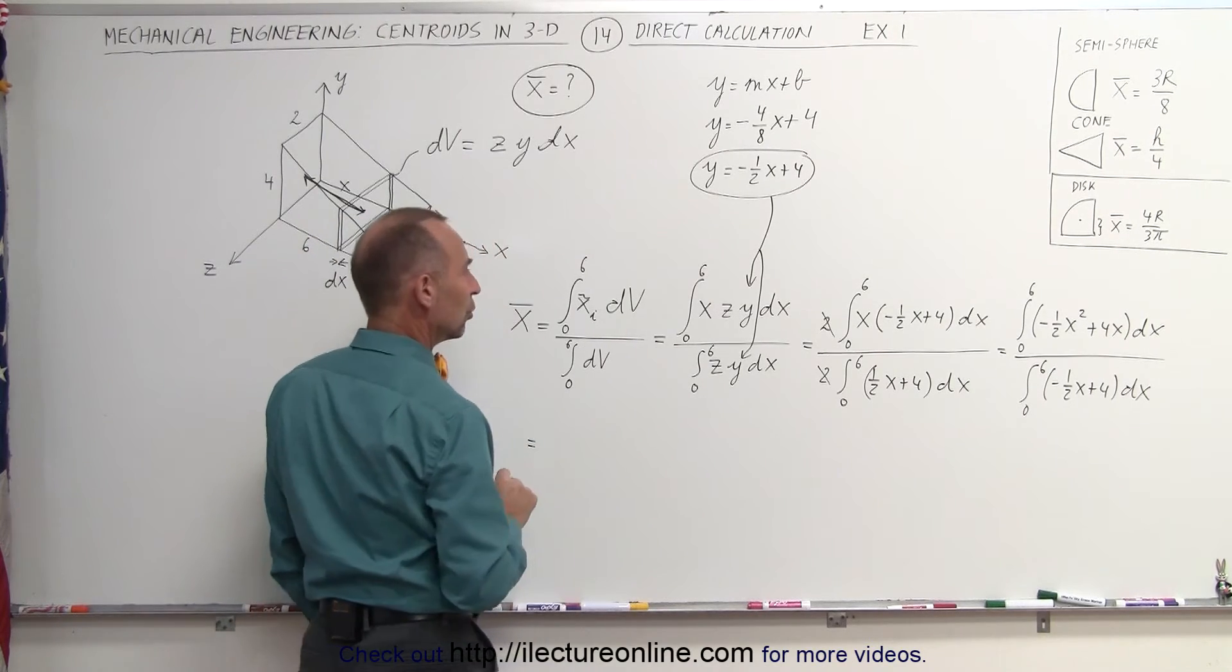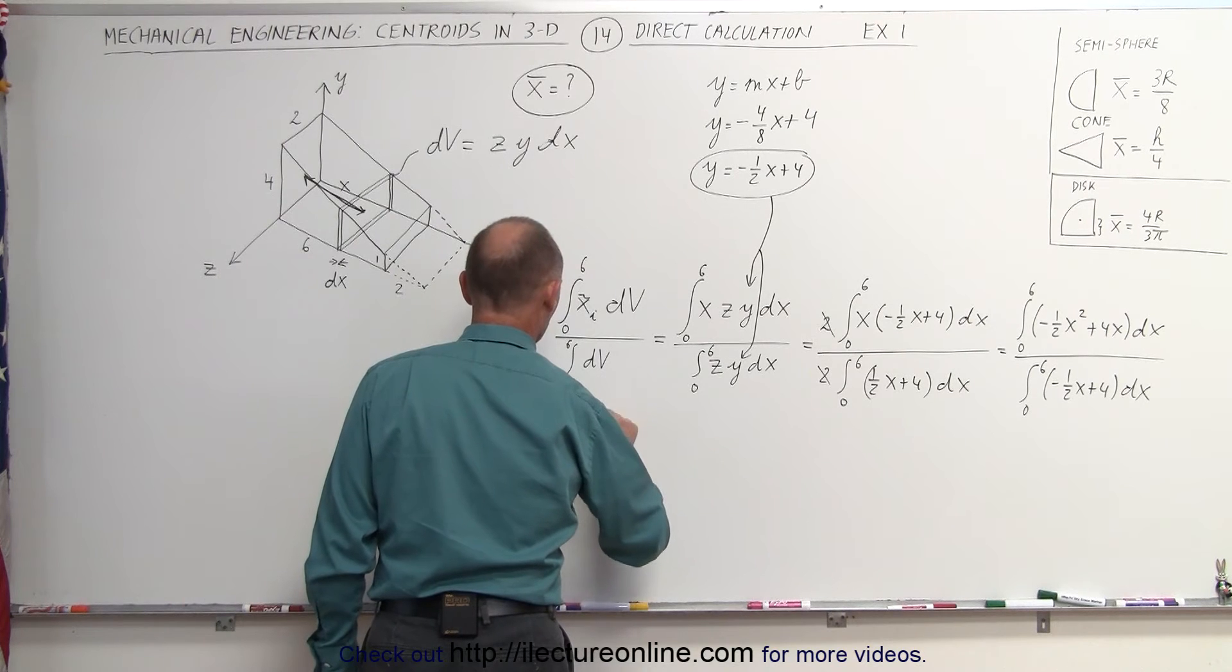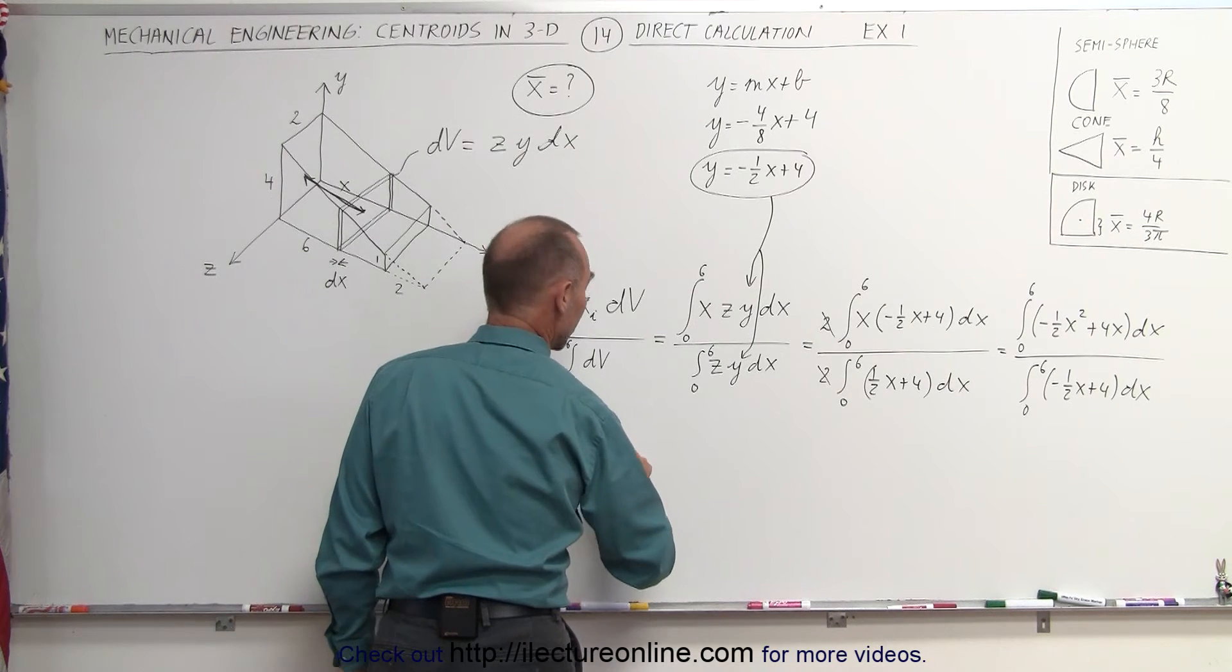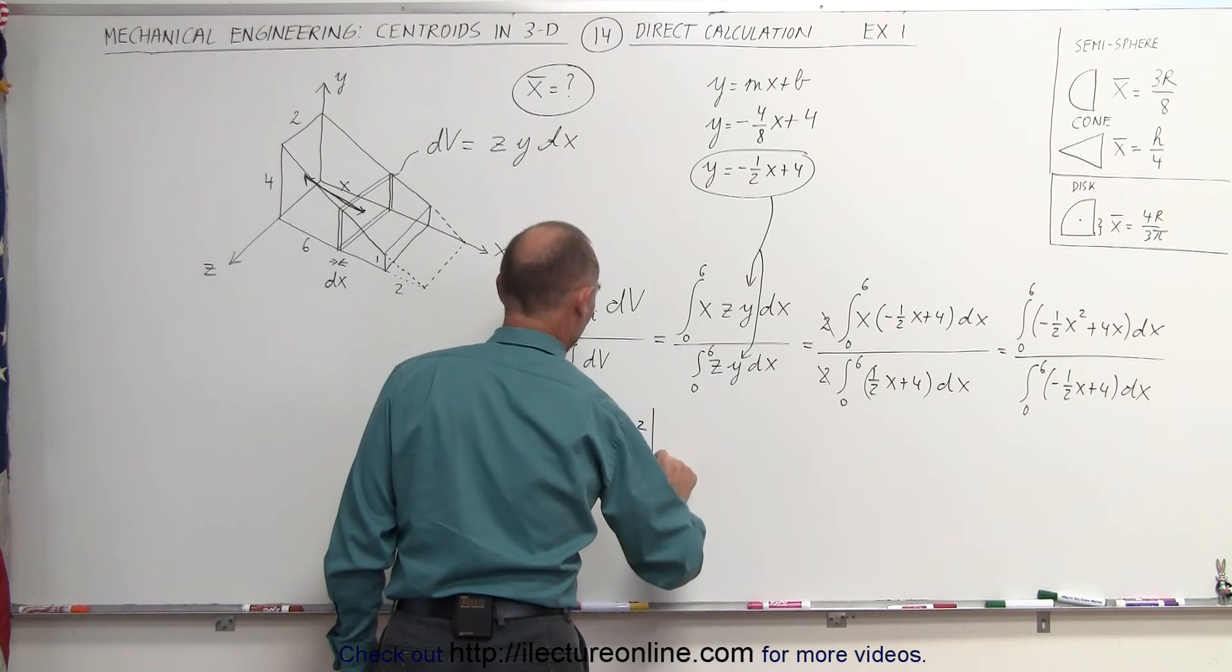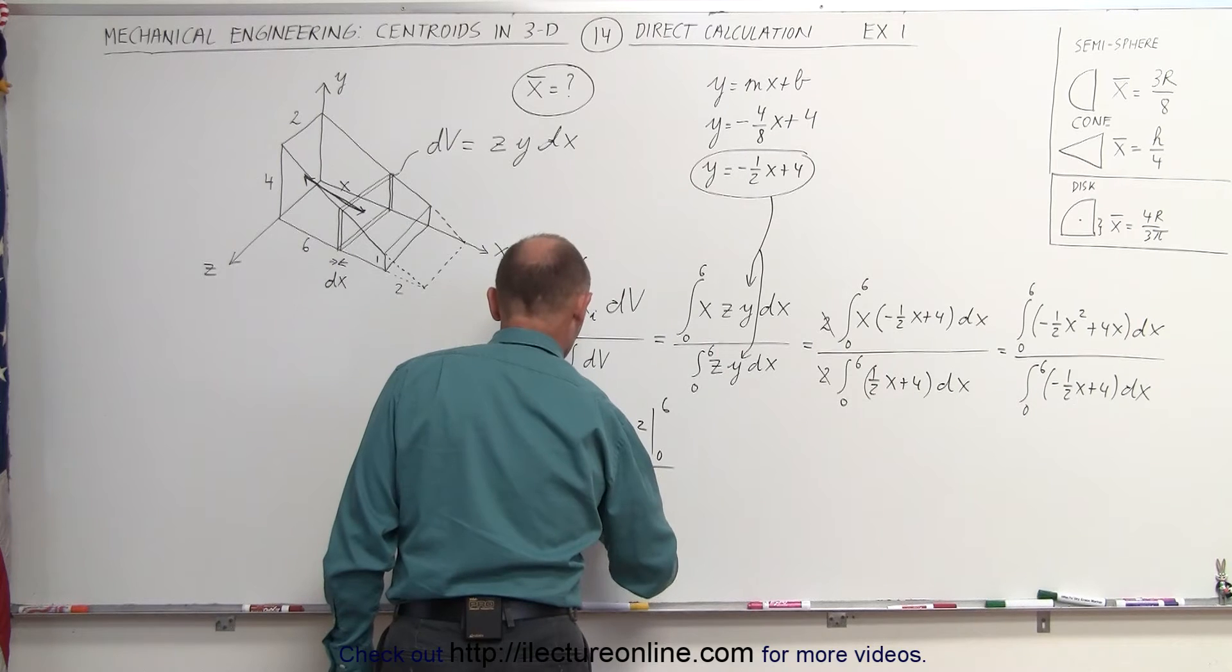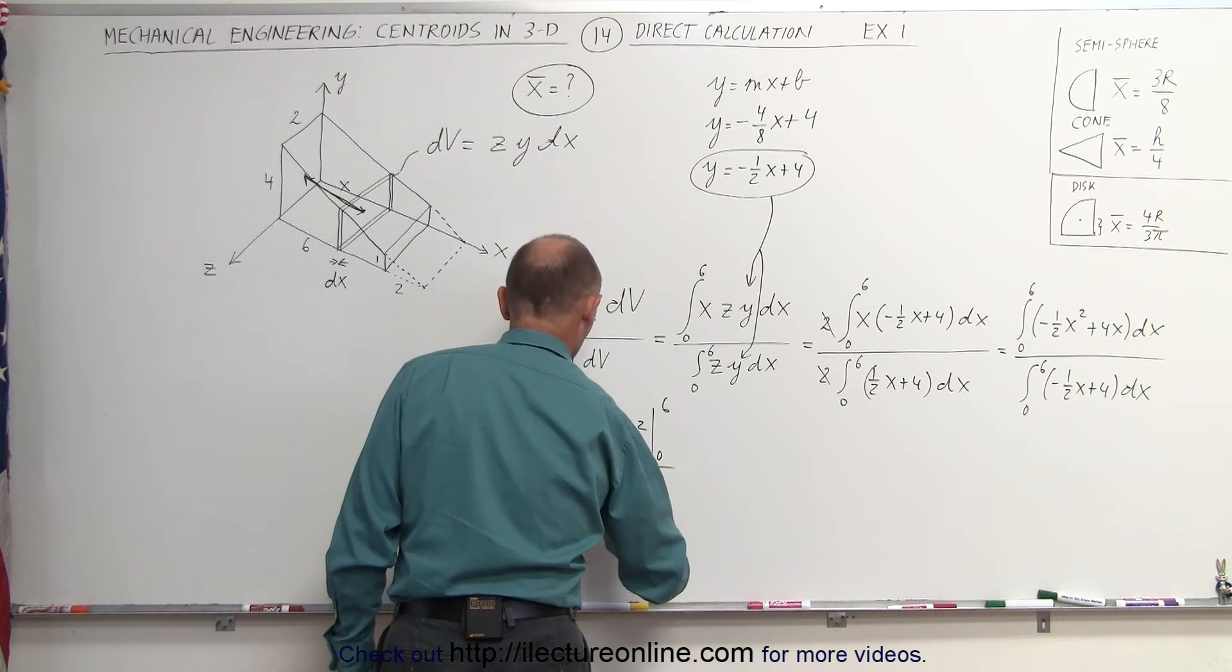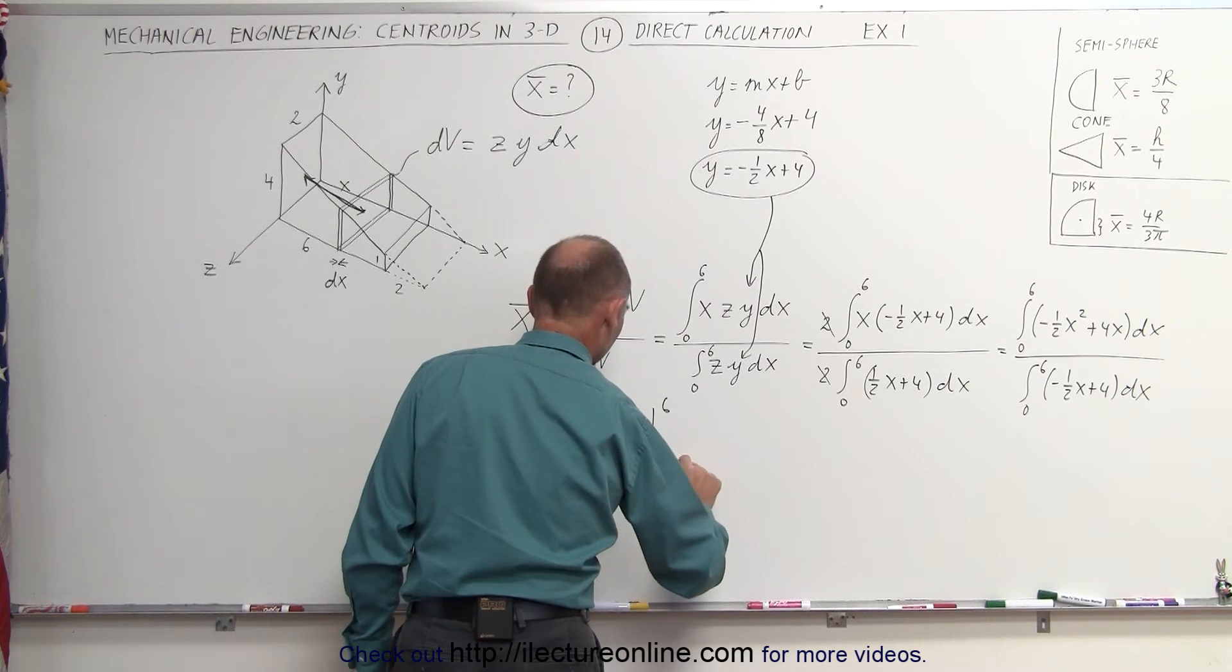This is equal to the numerator, we get minus 1 half x cubed over 3 plus 4x squared over 2, evaluated from 0 to 6, divide that by, the denominator is minus 1 half x squared over 2 plus 4x over 1, evaluated from 0 to 6.